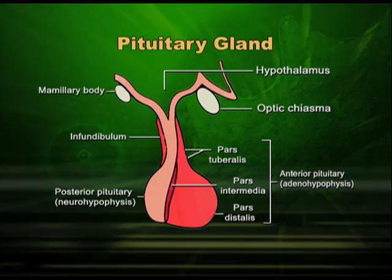Coming to the detail of the pituitary gland: the pituitary gland is also called hypophysis. It has three lobes — the anterior lobe, the posterior lobe, and the intermediate lobe. The anterior lobe is also known as pars distalis or adenohypophysis. The posterior lobe can also be called neurohypophysis or neural lobe, and the intermediate lobe is called the intermediate lobe.